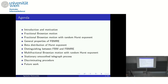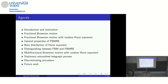We then went a step forward to multifractional Brownian motion, already mentioned yesterday. We also analyzed multifractional Brownian motion with random Hurst exponent, meaning the Hurst exponent is not a deterministic function but a stationary stochastic process. We found a very nice stochastic process useful in this area. At the end, I will give an overview of how to discriminate between fractional Brownian motion, fractional Brownian motion with random Hurst exponent, and multifractional Brownian motion with random Hurst exponent.